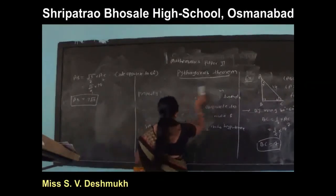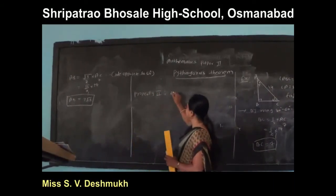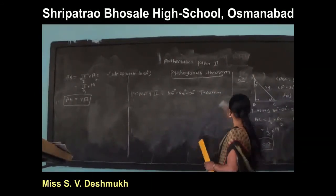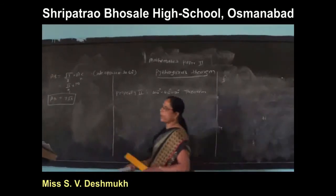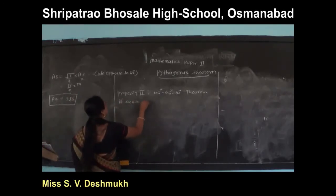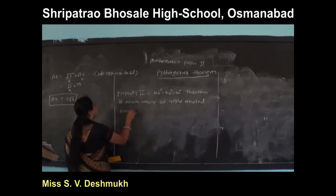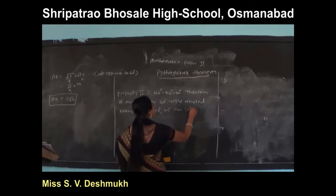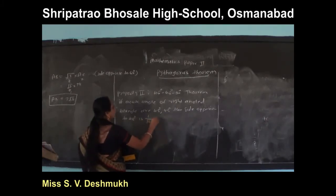The next property is property 2, the 45-45-90 degree theorem. In a right angle triangle, if the acute angles are both 45 degrees, then the side opposite to 45 degrees is 1 by root 2 into the hypotenuse.